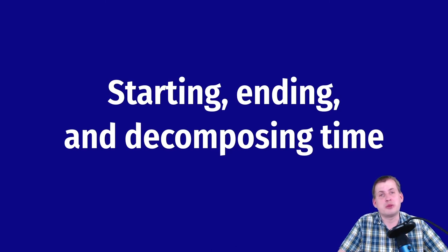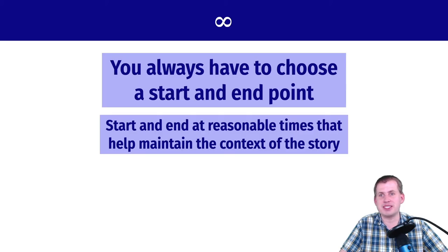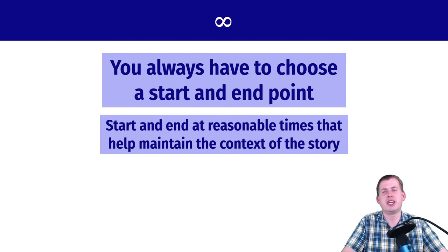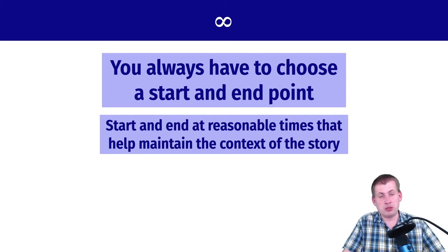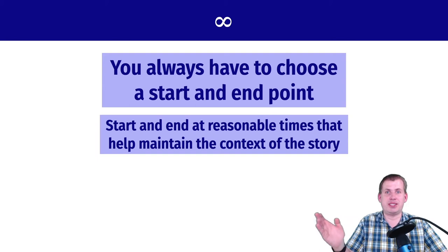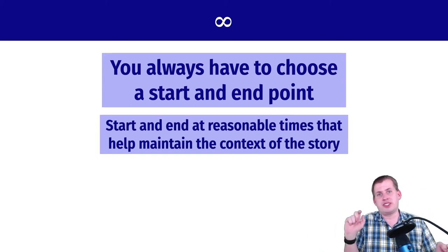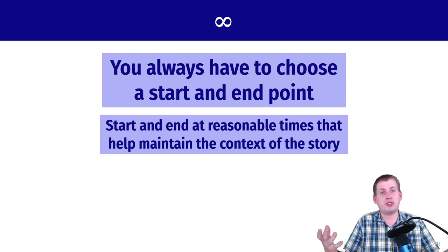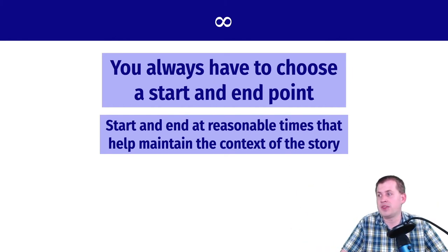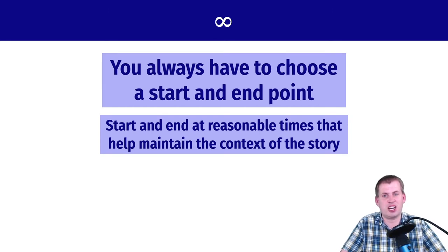A couple final points to watch out for when visualizing trends in time are the start and end dates. This is because time is infinite — it stretches on forever — so you always have to choose a starting point and an ending point whenever you're showing any sort of trend over time. You have to choose them in a way that maintains the context of the story and doesn't distort it.